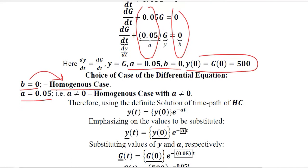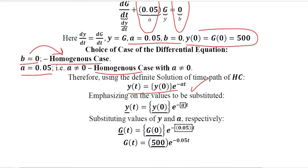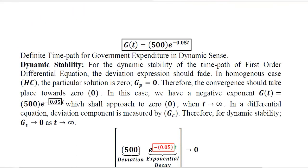So now we can use the formula of the homogeneous case. Here is the formula in its definite form. The value of a is here, so we can substitute it and we will get this answer, which is the time path of the government expenditure.